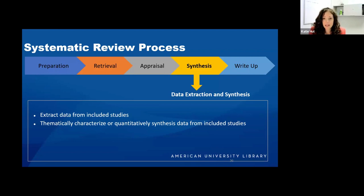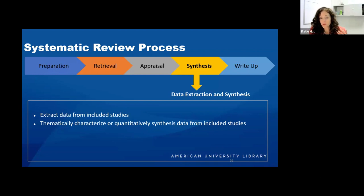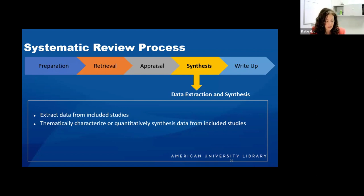If the studies are sufficiently similar, you can do a meta-analysis — a statistical approach to synthesizing results from multiple studies. But if the results are too heterogeneous — due to varying study designs, for example — then you would want to do a narrative or descriptive analysis. There's no one process for a narrative or descriptive analysis; it really varies.